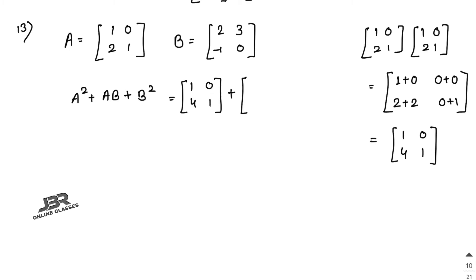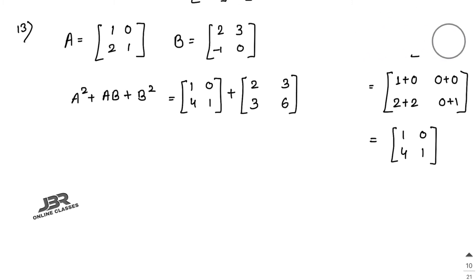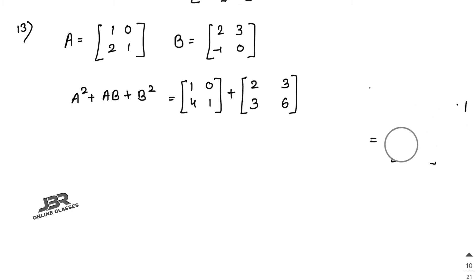Now find AB: 1×2 + 0×(−1) = 2, 1×3 + 0×0 = 3, 2×2 + 1×(−1) = 4 − 1 = 3, 2×3 + 1×0 = 6. So AB = [2, 3; 3, 6].